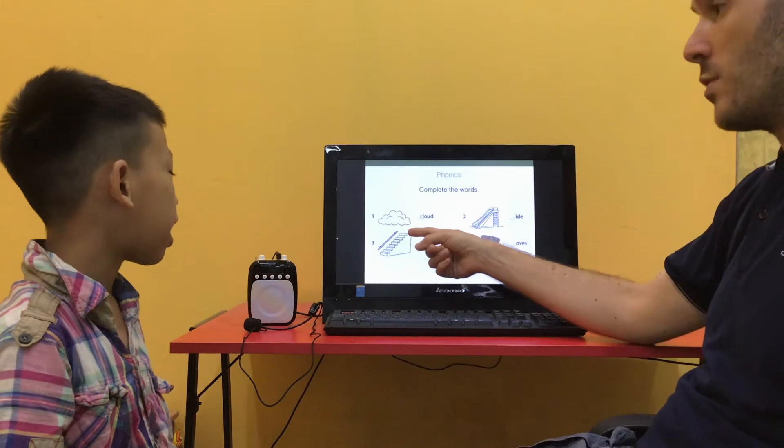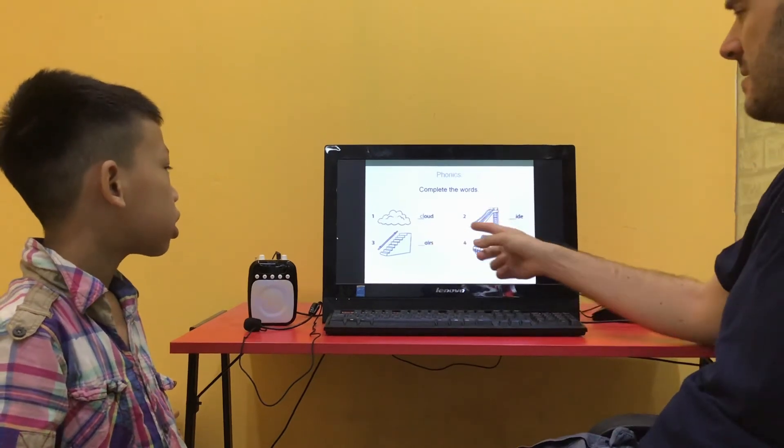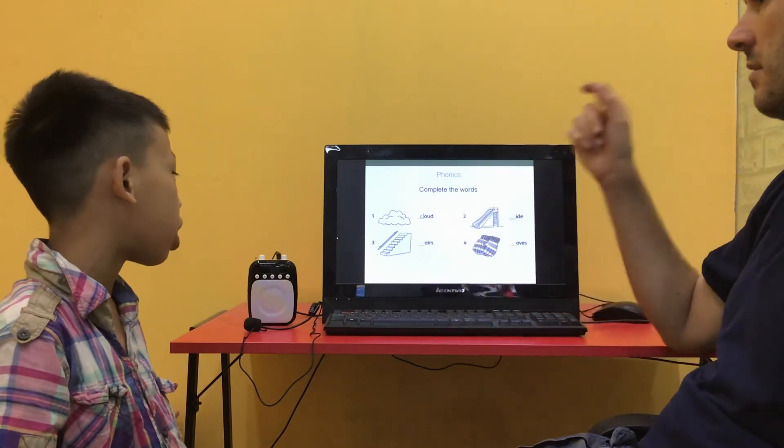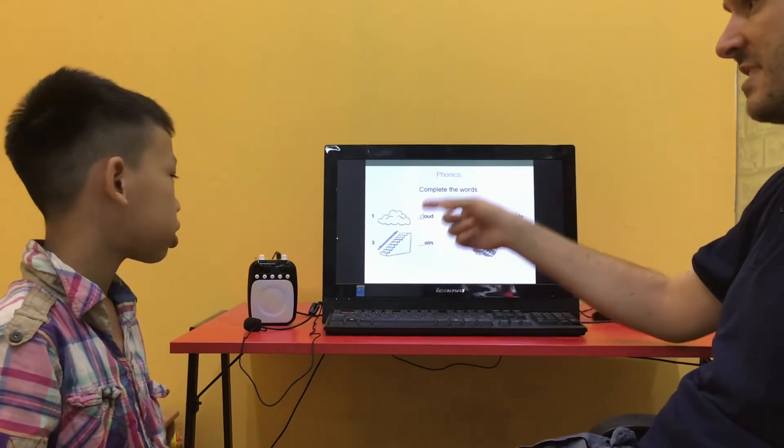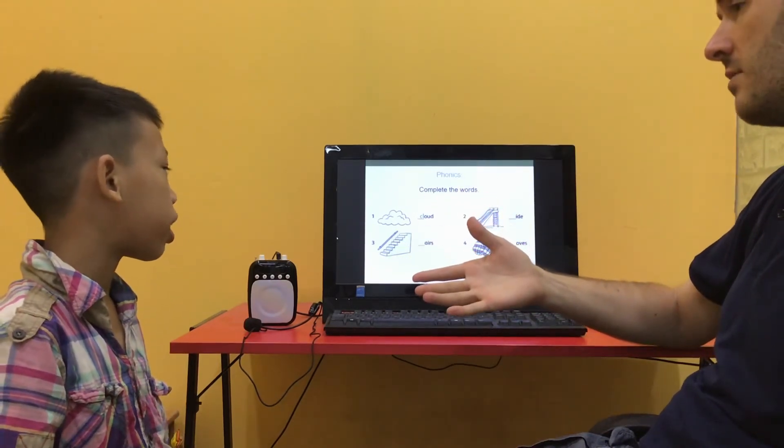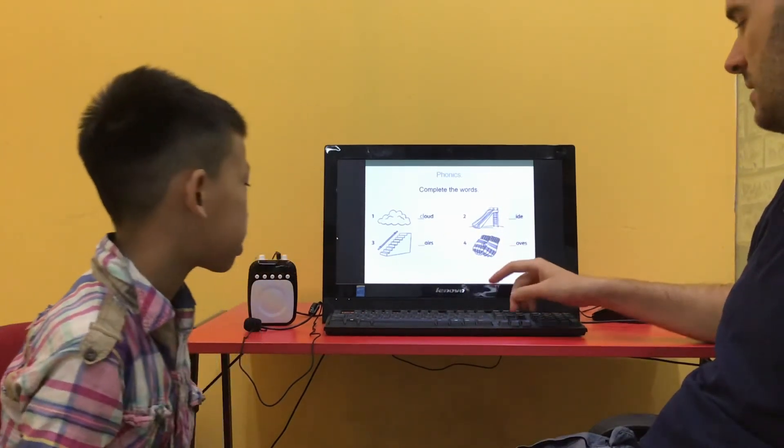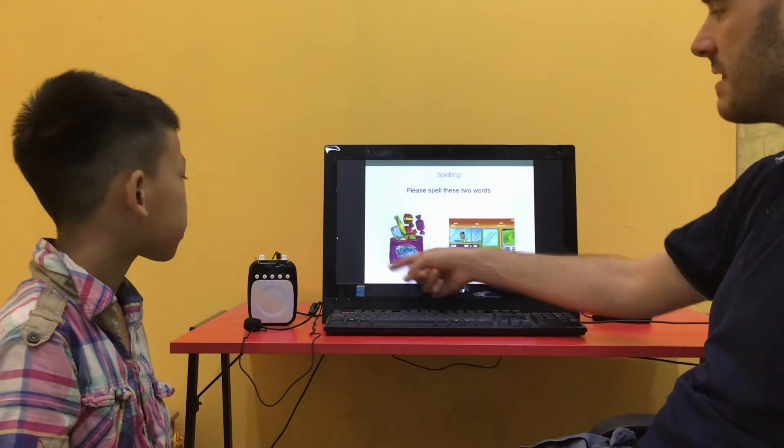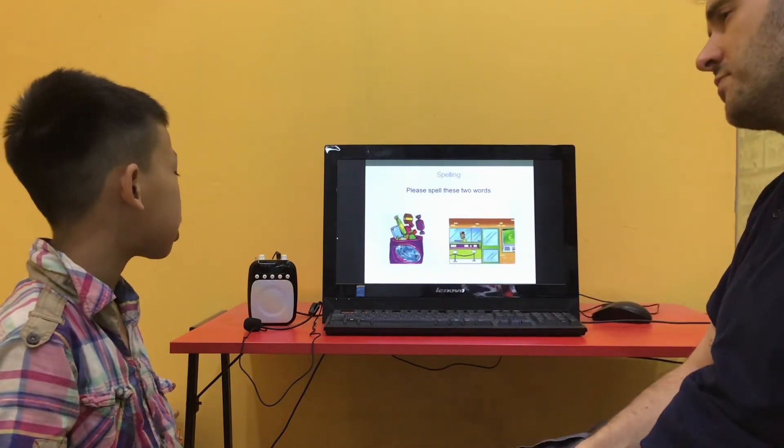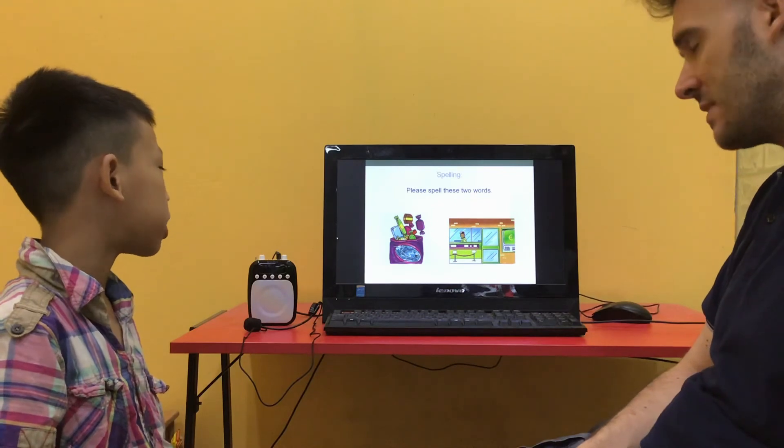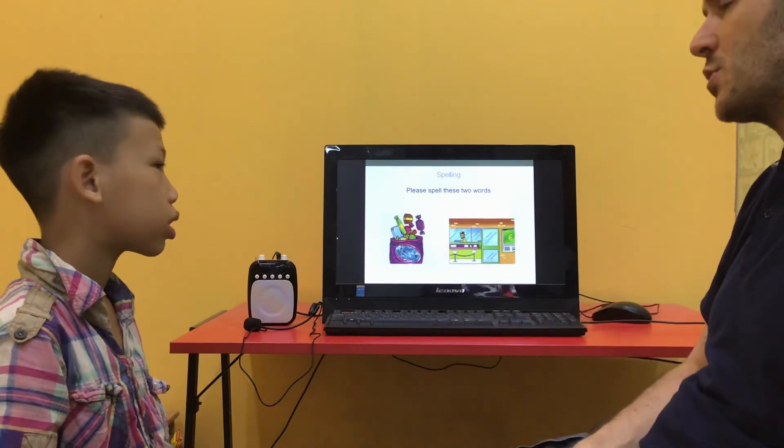This is a cloud. It's a slide. This is a star. Stairs. These are clothes. What are these? Sweets. These are sweets. Can you spell sweets?